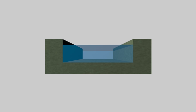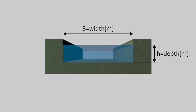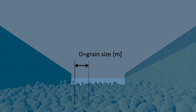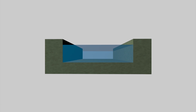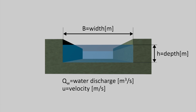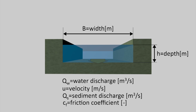We are now going to use a schematic cross section to define some important variables in a river. The geometry can be characterized by a width and a flow depth. Another important variable is the mean grain size of the sediment being transported by the river at this specific location. The flow is characterized by the water discharge — the volume of water per unit time that passes through this location — and the velocity of the flow. The amount of sediment that passes per unit time is called the sediment discharge. The bed and vegetation create a resistance force to the movement of water, expressed by the friction coefficient, which depends on the mean grain size, the presence of bed forms, vegetation, and so on.